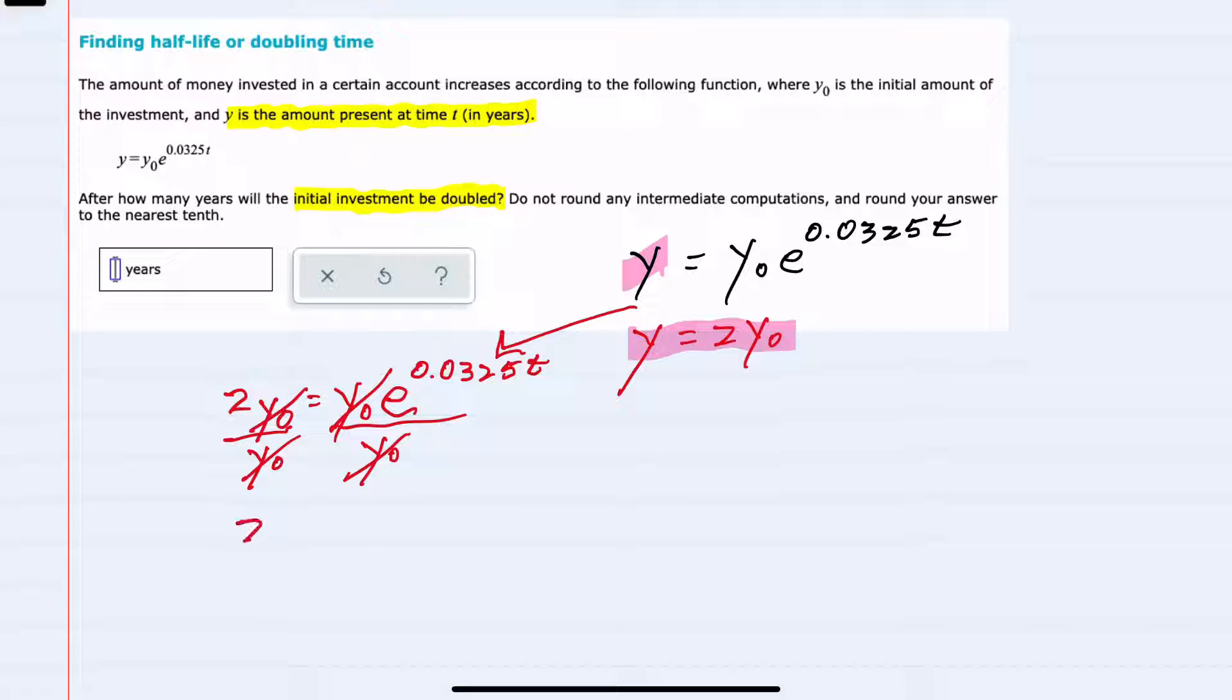This leaves just 2 on the left-hand side. On the right-hand side, e to the 0.0325t, we are looking to solve for t, which is in the exponent.